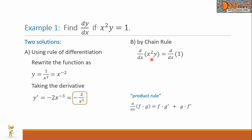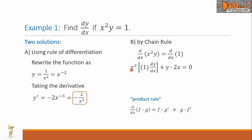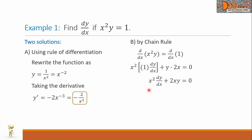Applying our product rule: we copy the first term, x squared, times the derivative of y, which is 1 times dy over dx, plus we copy y times the derivative of x squared, which is 2x. And this equals the derivative of 1, which is the constant 0. Simplifying the left side, we have x squared times dy over dx plus 2xy equals 0.